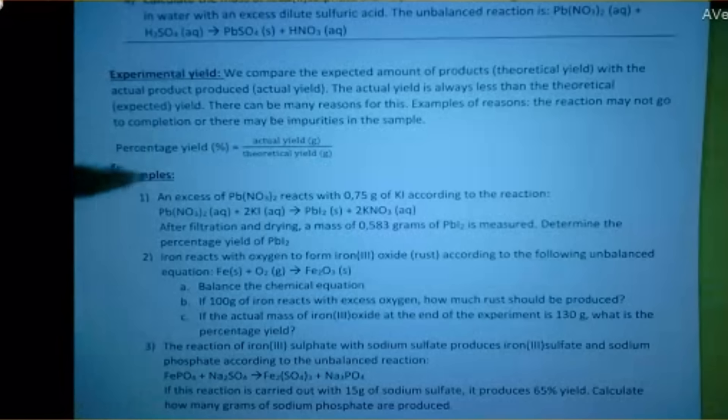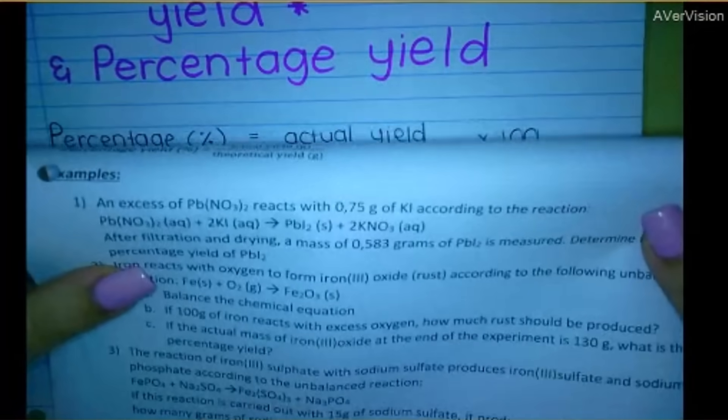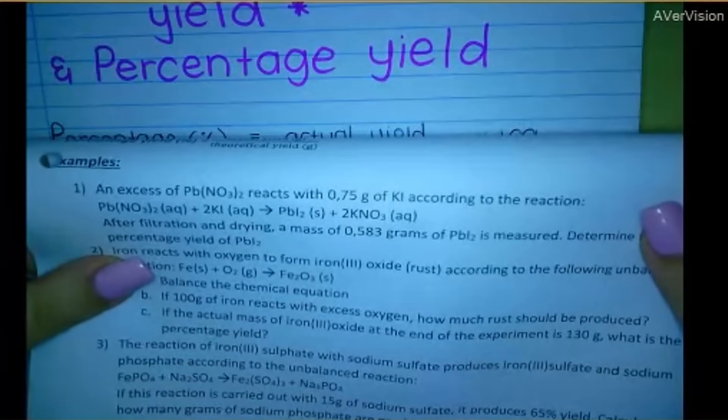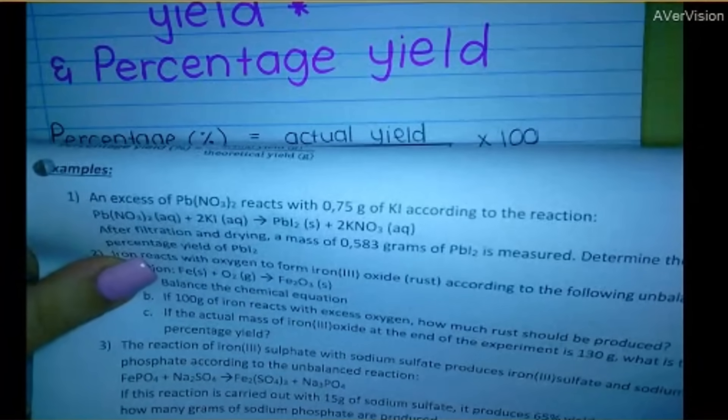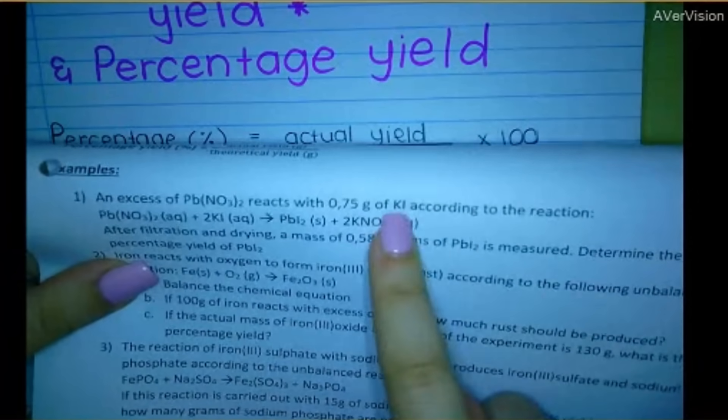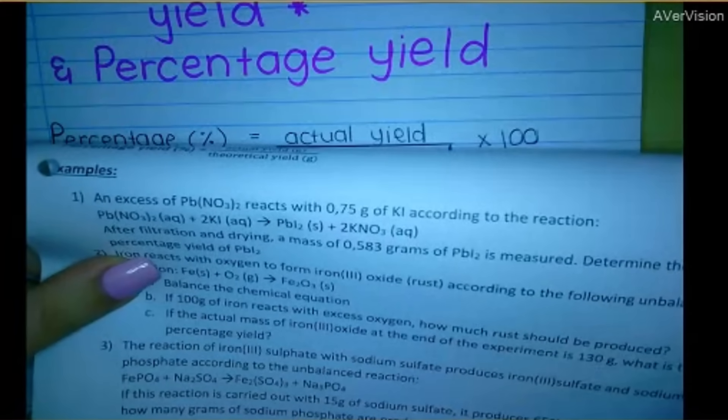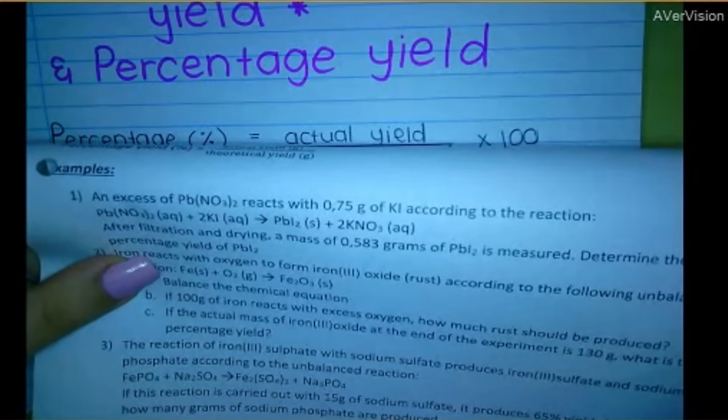And then I'm going to do example one with you guys. So if you want to write down the question, you may do so. It says an excess of lead nitrate reacts with 0.75 grams of potassium iodide, according to the following reaction. And they give you a balanced reaction.